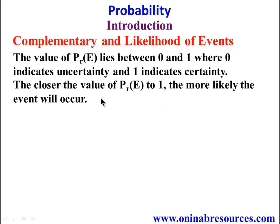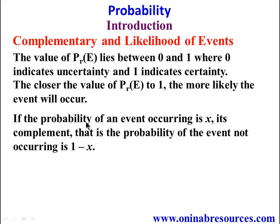The closer the value of P(E) to 1, the more likely the event will occur. If the probability of an event occurring is x, its complement — that is, the probability of the event not occurring — is 1 minus x.